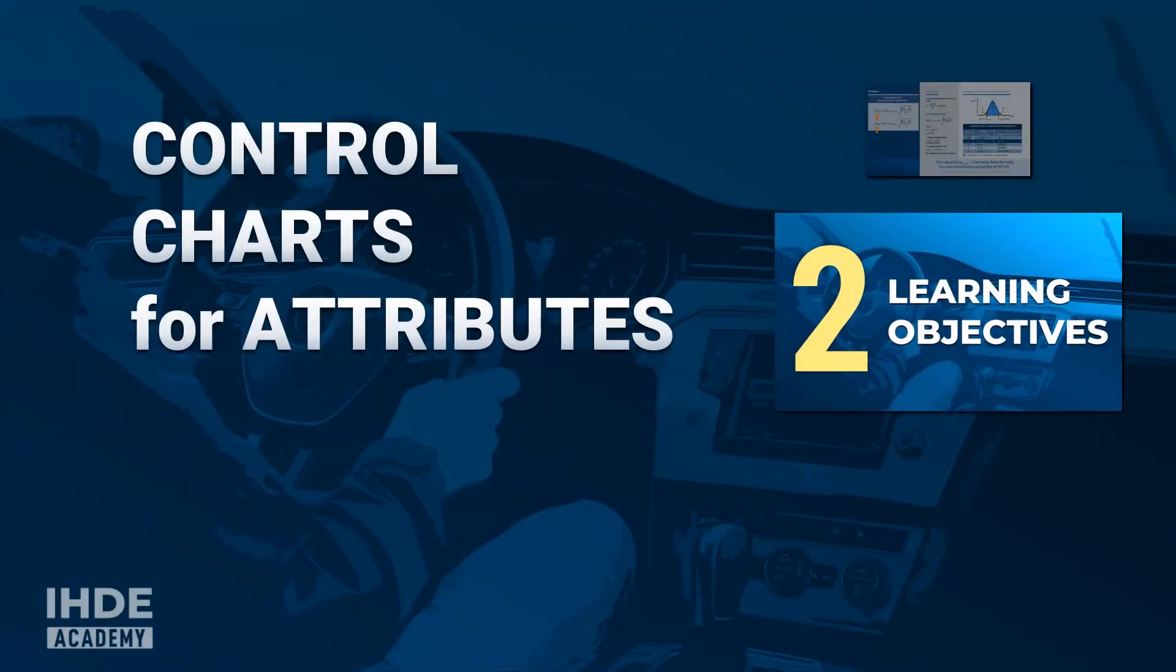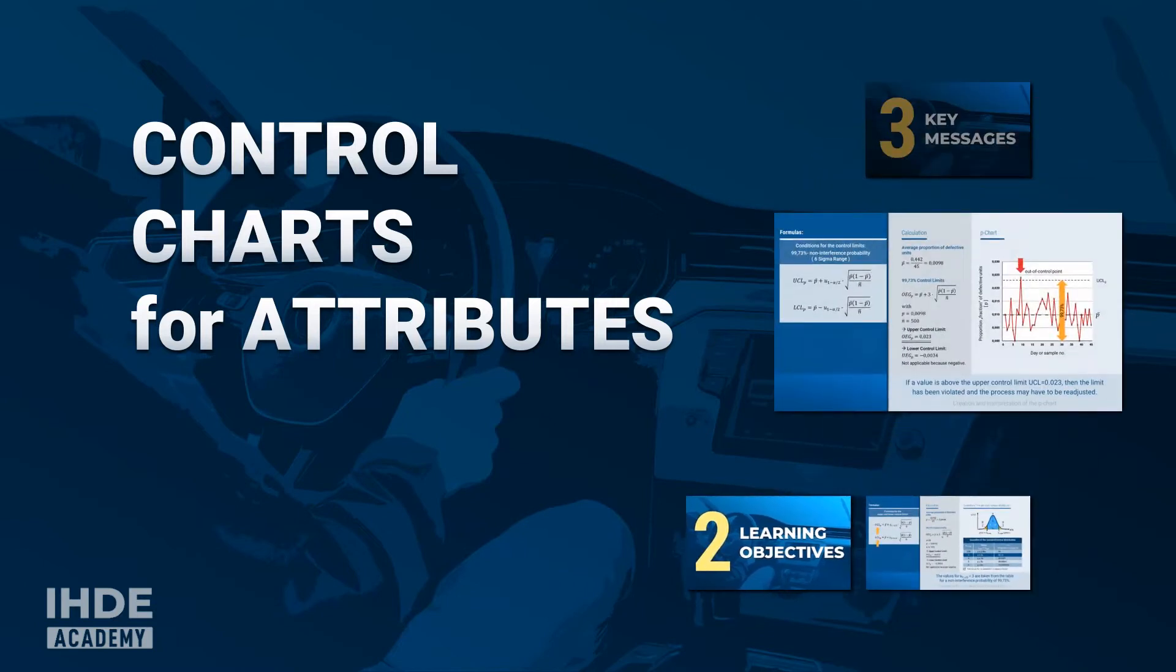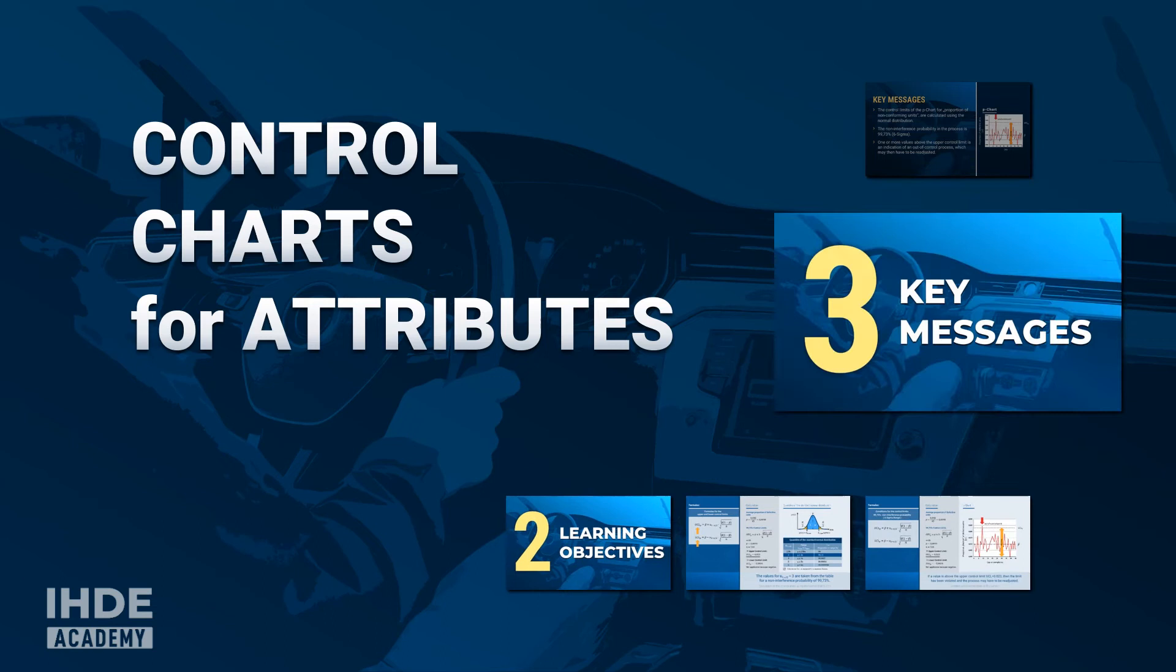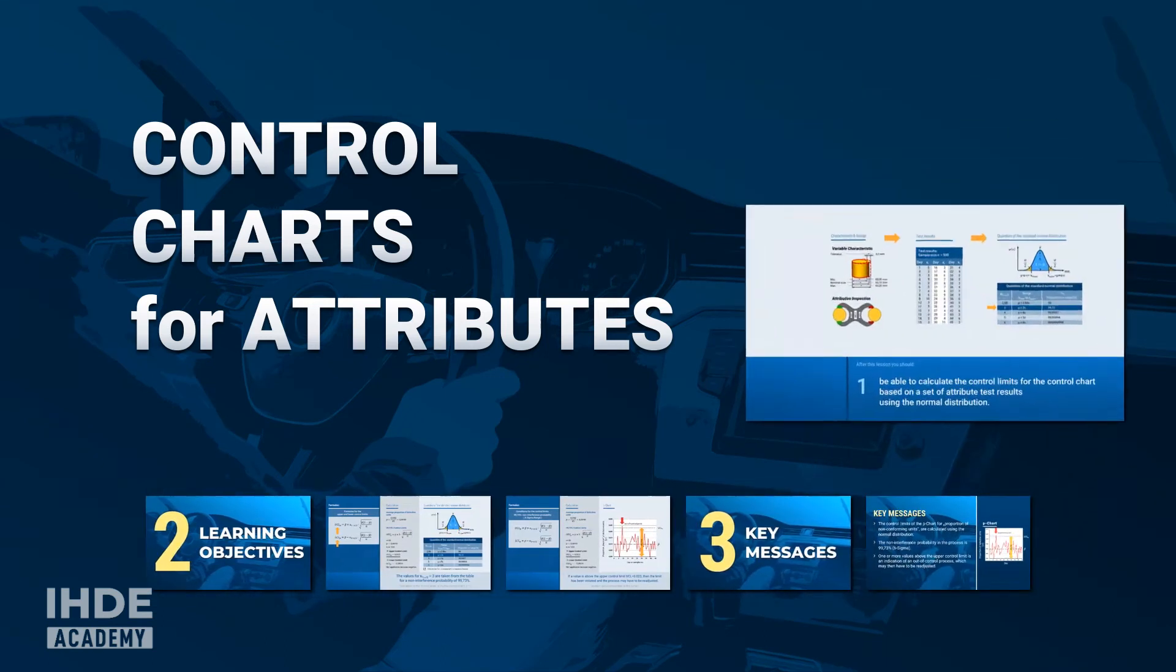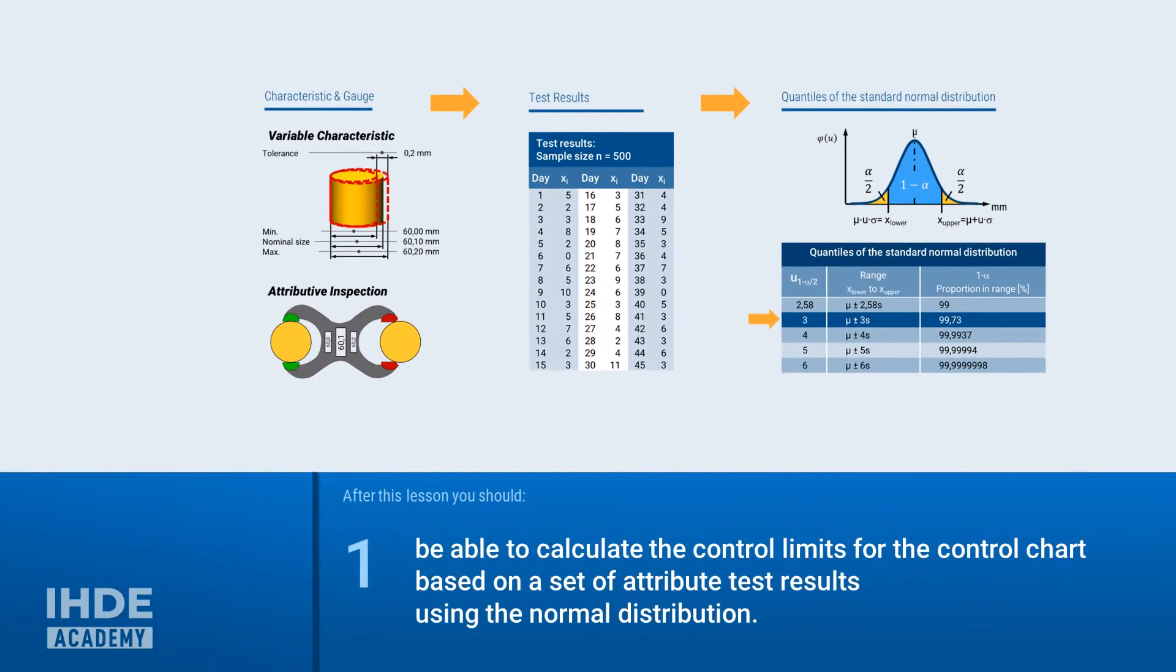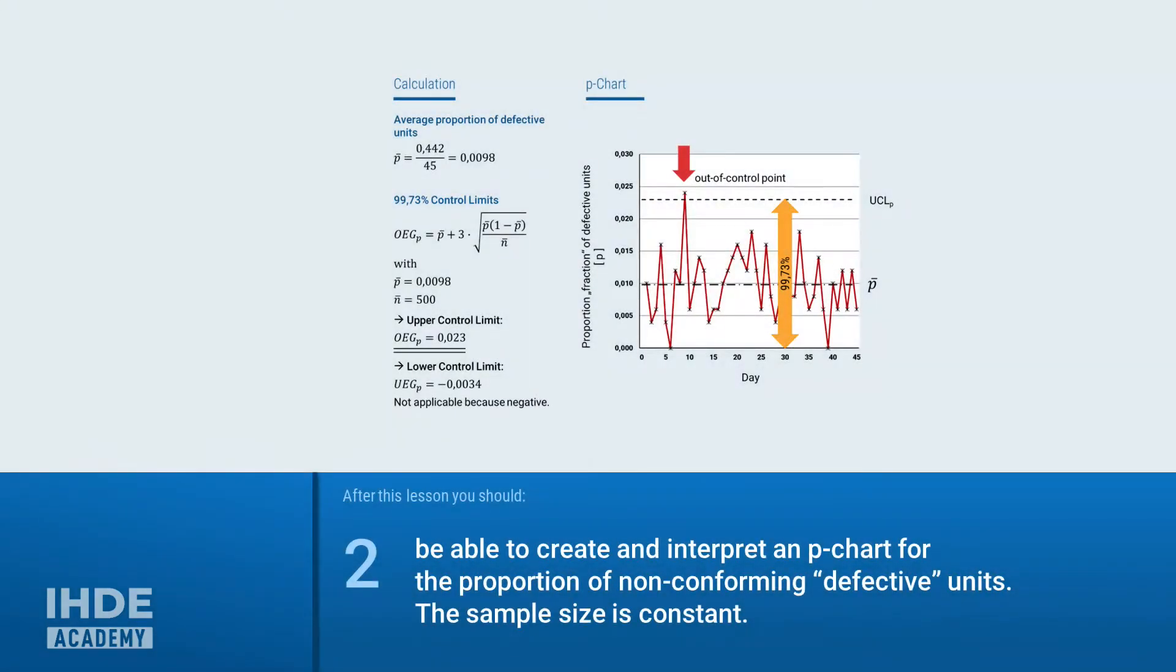The p-chart is a control chart for the proportion of defective units. In this lesson, we calculate the control limits using the normal distribution. Hello again to this lesson, which has two learning objectives. At the end, you should be able to calculate the control limits using the normal distribution and implement this knowledge in a control chart and interpret it.